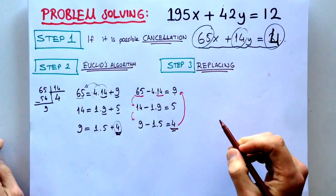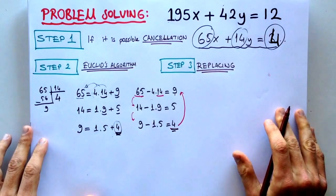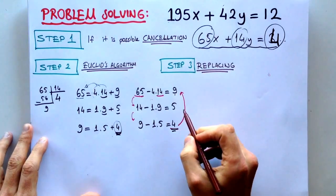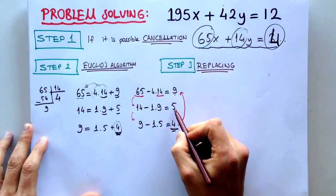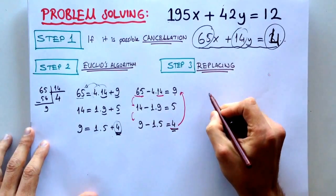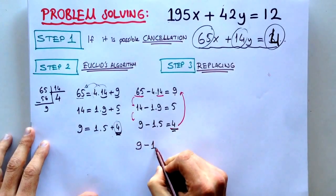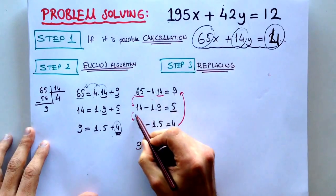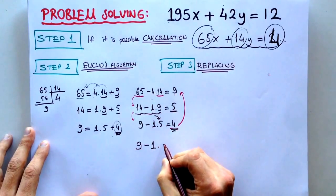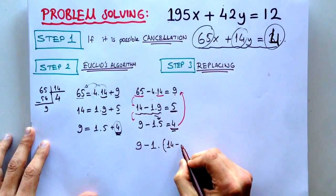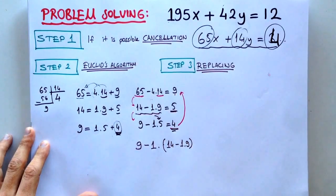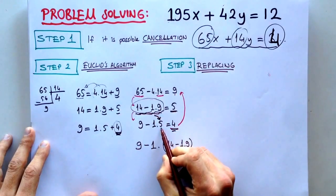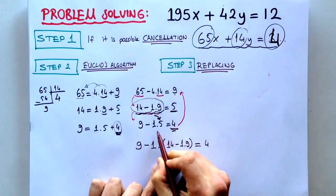We have to do that substitution method to observe this connection. For example, if you want to write this equation again, 9 minus 1 times... But if we substitute 5 to here, in a parenthesis, minus 1 times 9, we substitute this one into 5 is equal to 4, like this.